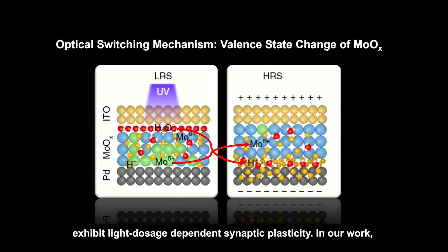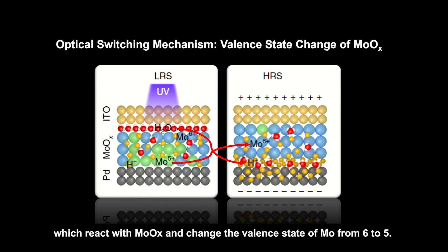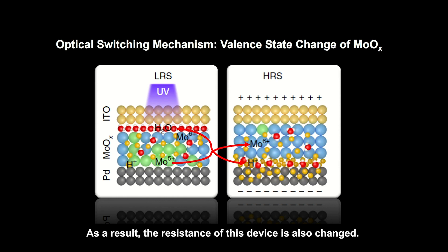In our work, we chose a photochromic material, molybdenum trioxide, to construct a RAM device. Under UV light stimulation, it generates protons which react with molybdenum trioxide and change the valence state of molybdenum from +6 to +5. As a result, the resistance of the device is also changed.